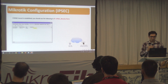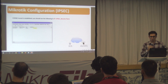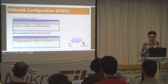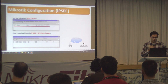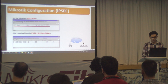If everything goes well, you should see in the IPsec remote peers that peers are connected to each other — this is phase one. And if phase two has completed successfully, you should see the security associations installed and the policy running.